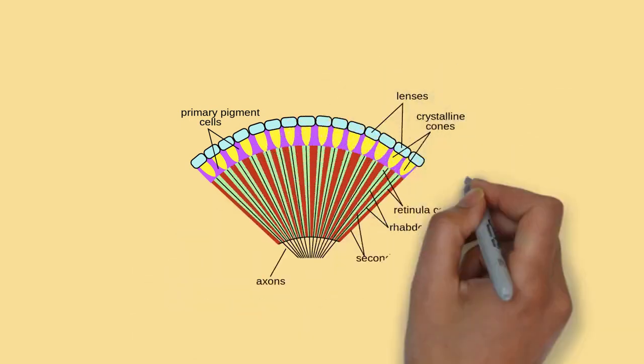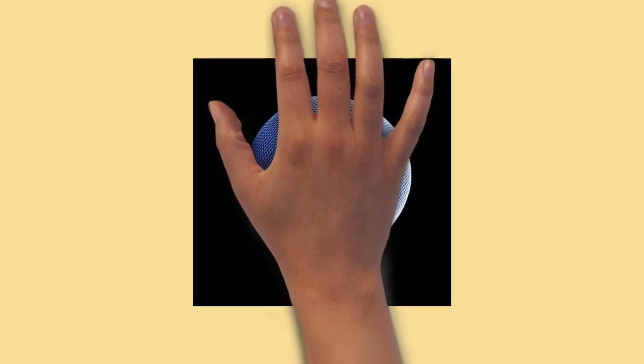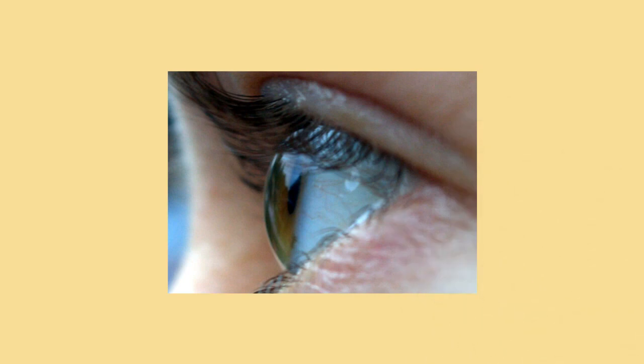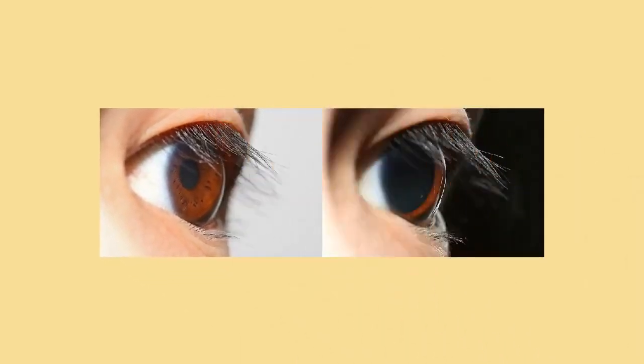The retina contains two major types of light-sensitive photoreceptor cells used for vision: the rods and the cones. Rods cannot distinguish colors, but are responsible for low-light (scotopic), monochrome (black and white) vision; they work well in dim light as they contain a pigment — rhodopsin (visual purple) — which is sensitive at low-light intensity, but saturates at higher (photopic) intensities. Rods are distributed throughout the retina but there are none at the fovea and none at the blind spot. Rod density is greater in the peripheral retina than in the central retina.